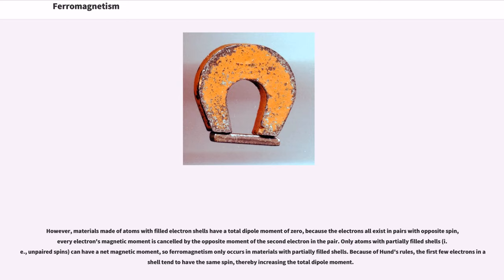However, materials made of atoms with filled electron shells have a total dipole moment of zero, because the electrons all exist in pairs with opposite spin. Every electron's magnetic moment is cancelled by the opposite moment of the second electron in the pair. Only atoms with partially filled shells, i.e., unpaired spins, can have a net magnetic moment, so ferromagnetism only occurs in materials with partially filled shells.